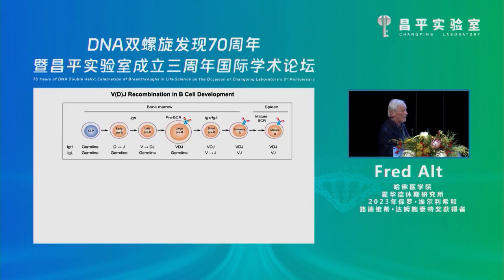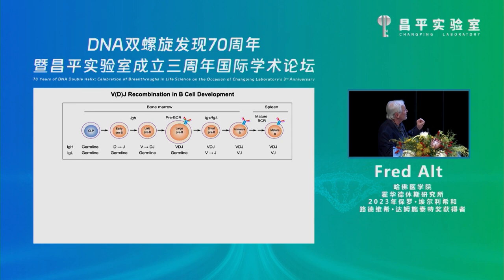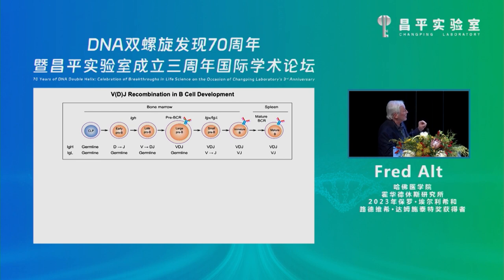For background, during B cell development, B cells go through a very set series of developmental stages. During those stages, they assemble first their immunoglobulin heavy chain variable region genes. They first put D segments into J segments, and then V segments into DJ segments. These reactions occur only when progenitor B cells are arrested in the G1 phase of the cell cycle. Once they make a heavy chain, they differentiate into precursor B cells, where they can assemble their light chain variable regions by joining Vs to Js.